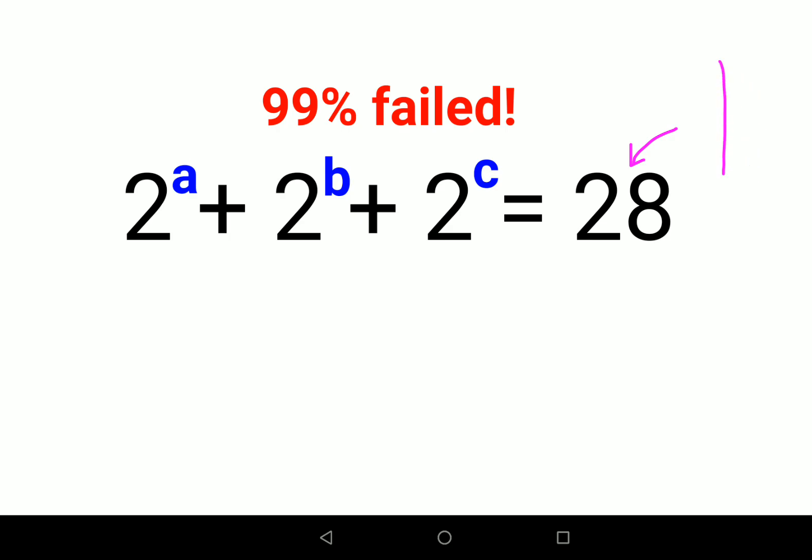So 28, when you factorize 28, you have to factorize it in such a way that you get the highest multiple of 2. So 28 is nothing but 4 into 7, which can be written as 2 raised to 2 into 7. So let's first do that. Here we'll keep this as 2 raised to 2 into 7.